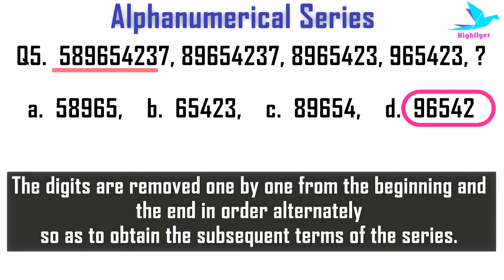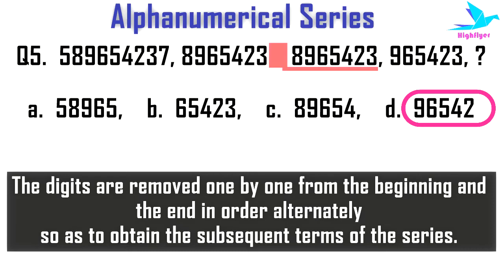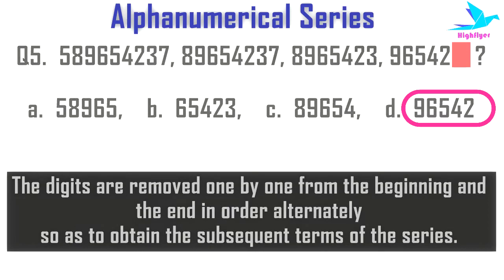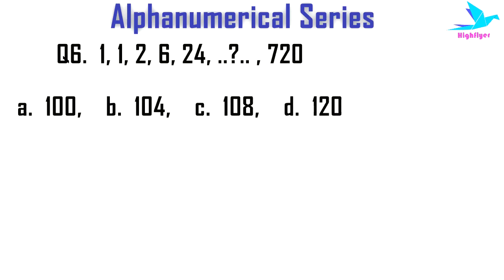Like: 5 8 9 6 5 4 2 3 7 is the first number. For the next number, 5 from the beginning is removed, giving 8 9 6 5 4 2 3 7. Then 7 is removed from the end, giving 8 9 6 5 4 2 3. Then 8 is removed from the beginning, giving 9 6 5 4 2 3. The next number will be 9 6 5 4 2 because 3 would be removed from the end.